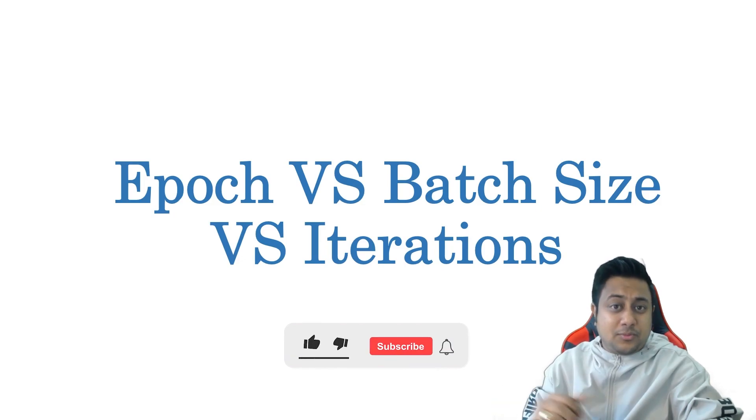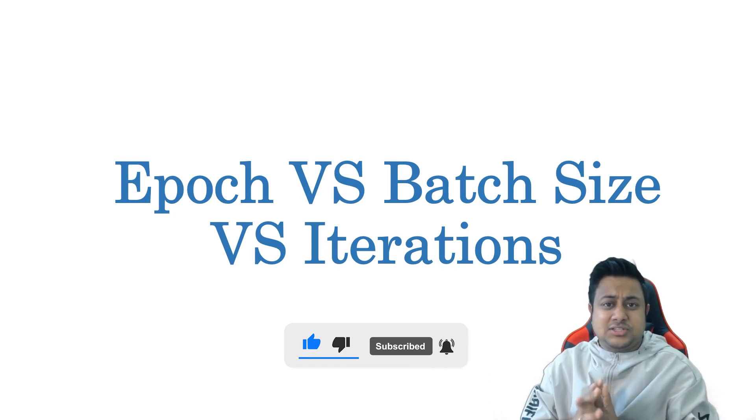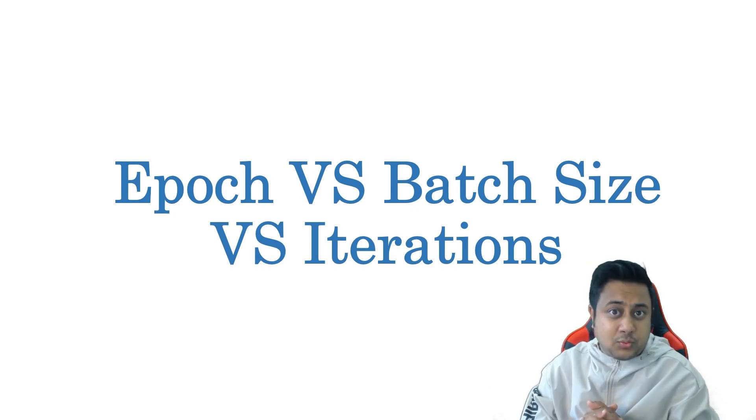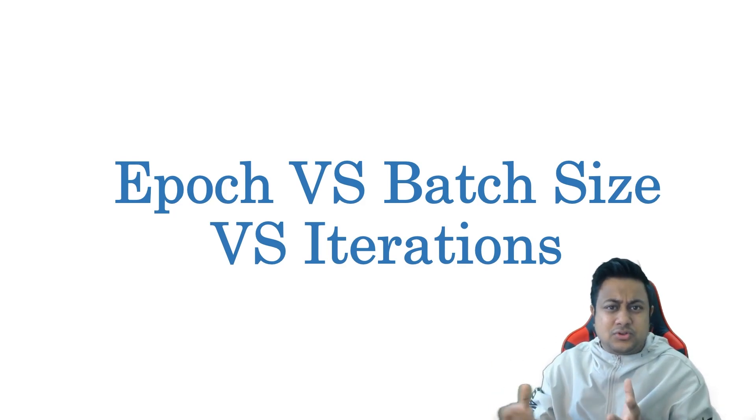Hey guys, welcome back to my channel. In this video, we'll be talking about epoch, batch size, iterations, and all these topics. These terminologies are used widely in neural networks, CNNs, ANNs, and whatever it is. But many times people get confused - what exactly are epochs?